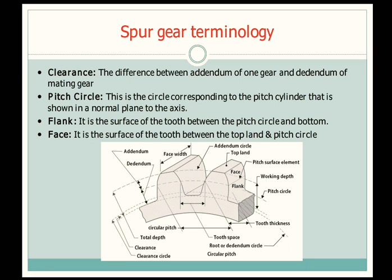Next is flank. It is the surface of the tooth between the pitch circle and the bottom. From the figure you can see that the surface between the pitch circle and the bottommost position of the teeth is known as the flank. Face is the surface of the tooth between the top land and the pitch circle — the surface between the pitch circle and the topmost point of the gear teeth. Top land is the flat surface present on the very top of the gear.